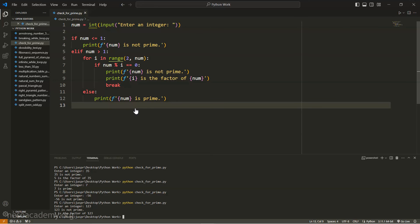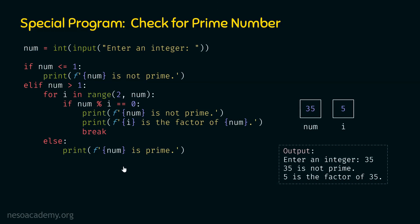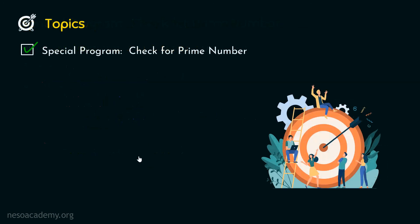We have executed this program in Visual Studio Code and we are now done with this topic — special program: check for prime number. This means we are done with this presentation. Thank you for watching, and I will see you in the next one.